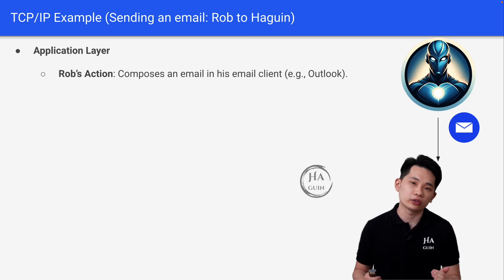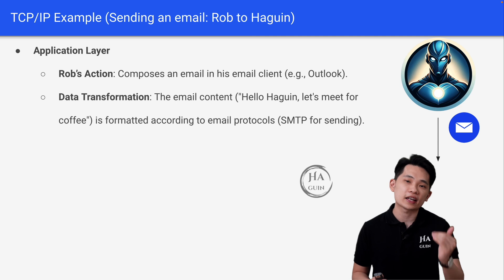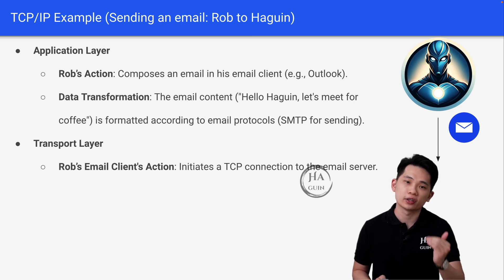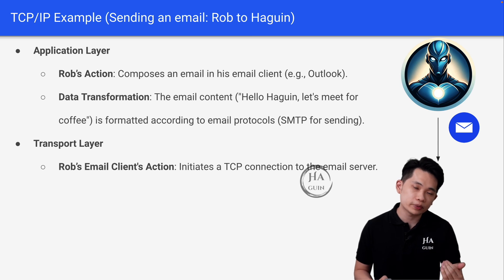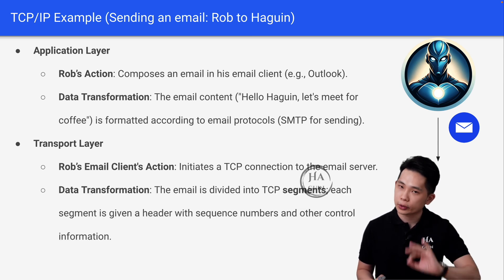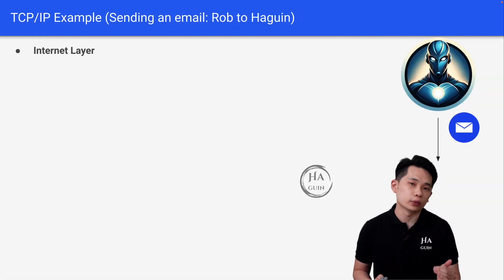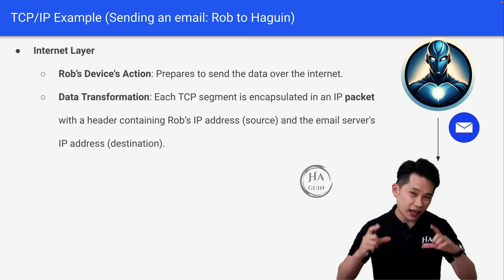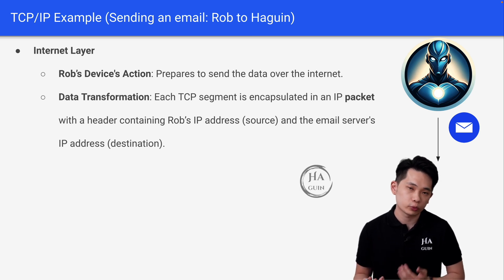The email content will include things like: "Hello Hagrin, let's meet for coffee." The data will be formatted according to email protocols — for example, SMTP for sending. Next, at the transport layer, Rob's email client will initiate a TCP connection to the email server. The email is divided into TCP segments, and each segment is given a header with sequence numbers and other control information. At the internet layer, Rob's device will prepare to send the data over the internet. Each TCP segment is encapsulated in an IP packet with a header containing Rob's IP address as the source and the email server's IP address as the destination.